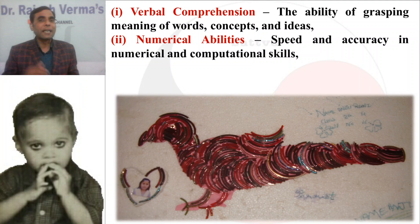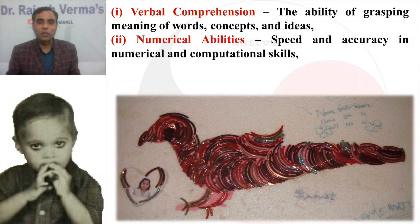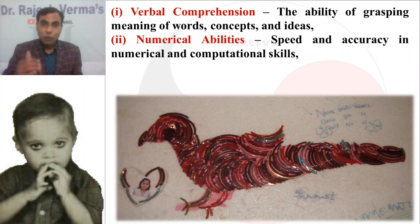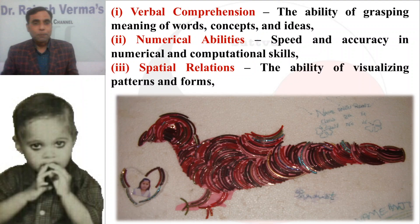The second is numerical abilities. Numerical means numbers — the speed and accuracy in numerical and computational skills. For example, if someone asks 2 plus 2 multiplied by 2, most students answer 8, but the correct answer is 6 as per order of operations. Individuals who have a higher level of numerical ability produce accurate results as far as numbers and computation are concerned.